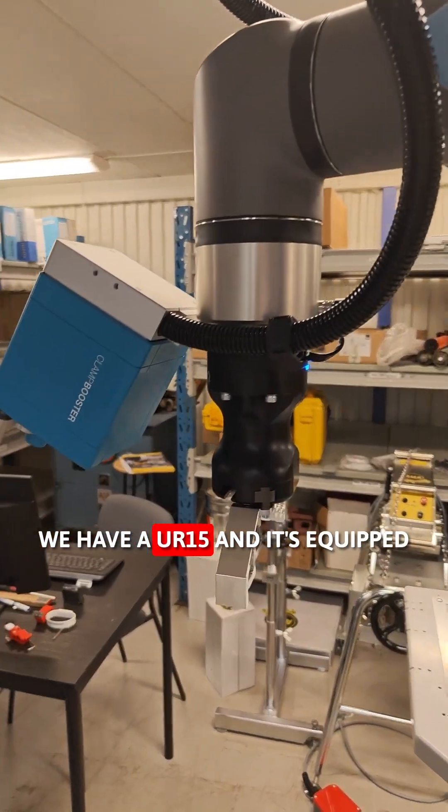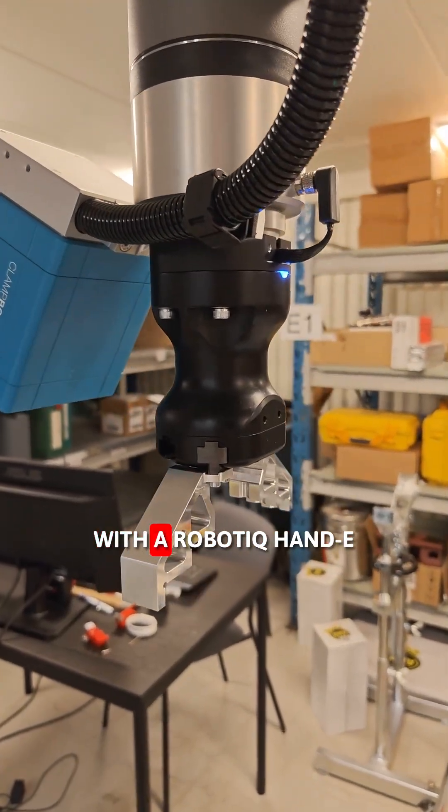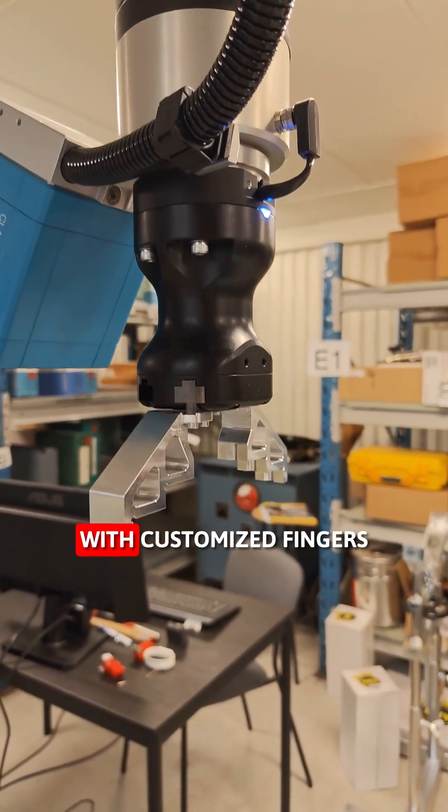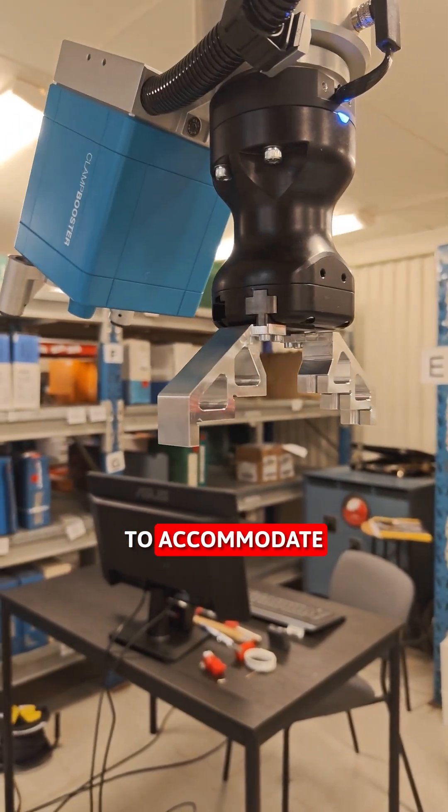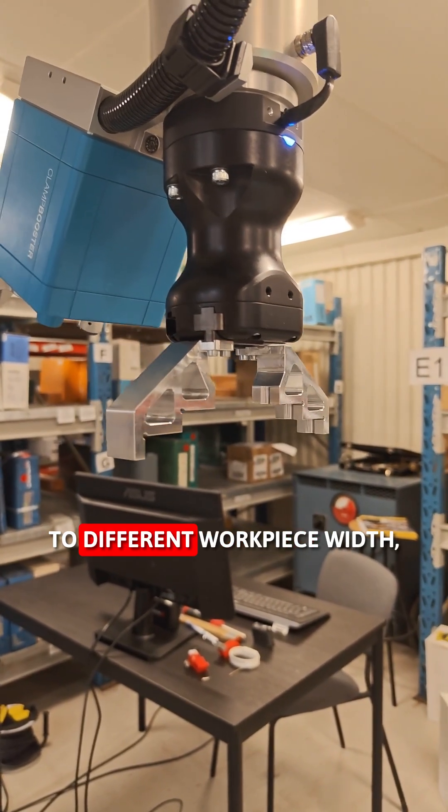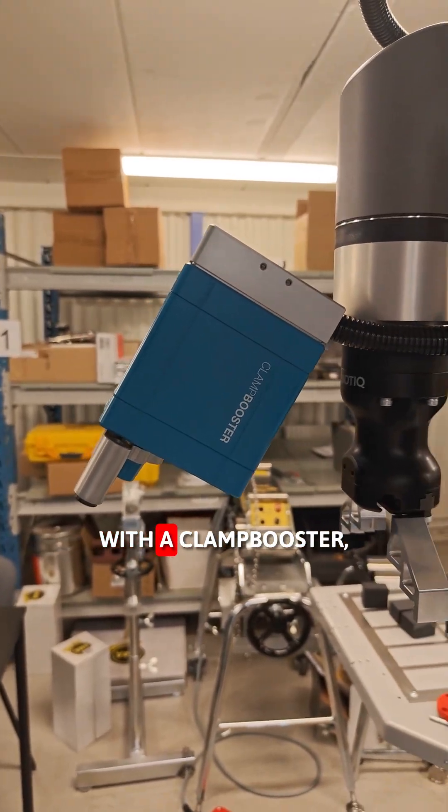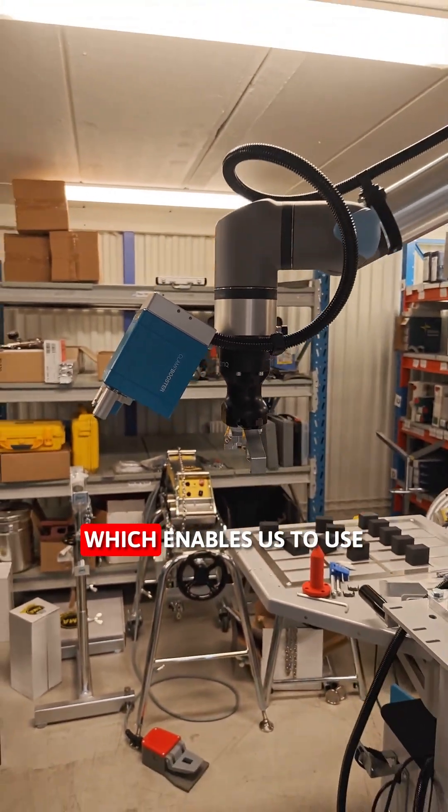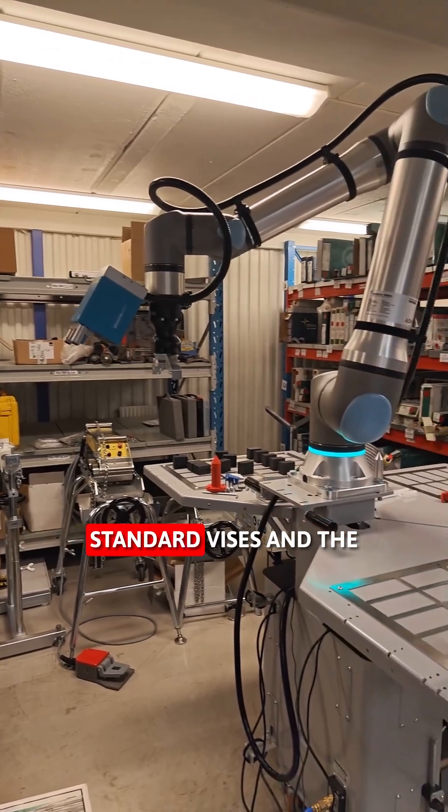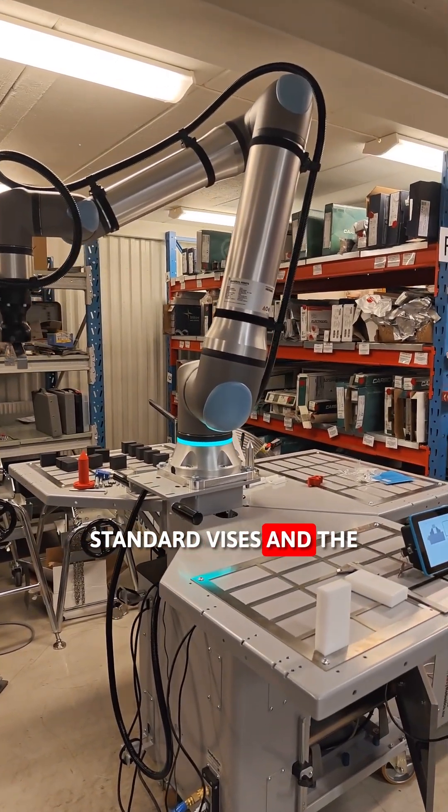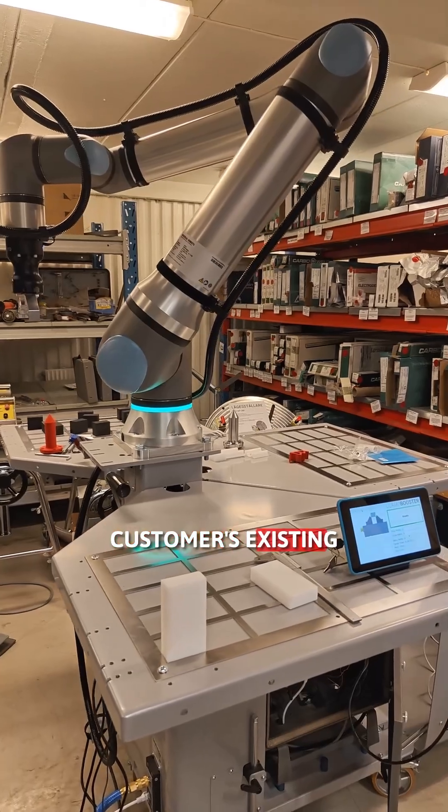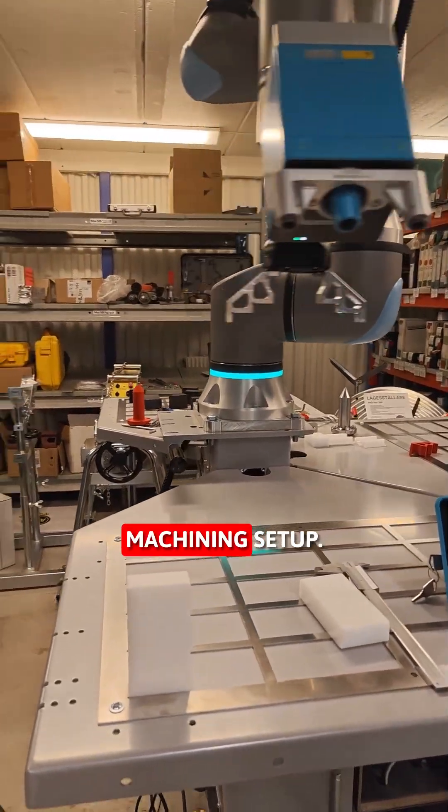We have a UR15 and it's equipped with a robotic handy with customized fingers to accommodate different workpiece widths, and it's also equipped with a clamp booster which enables us to use standard vices and the customer's existing machining setup.